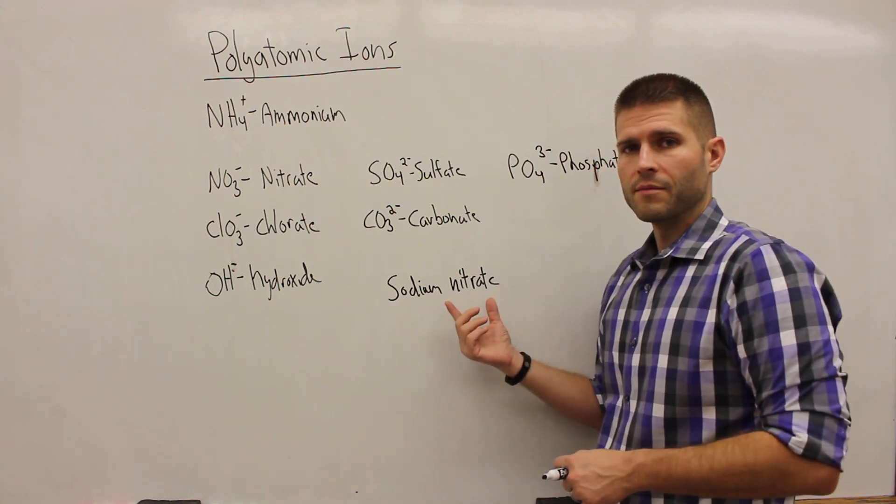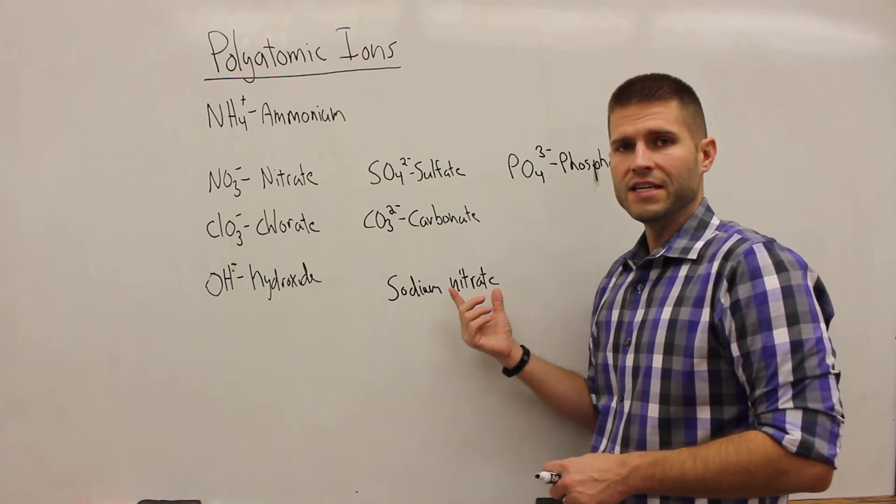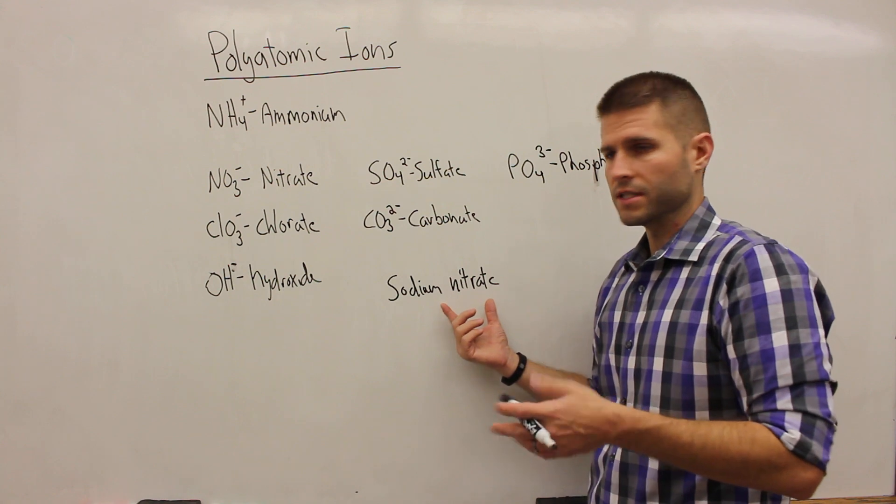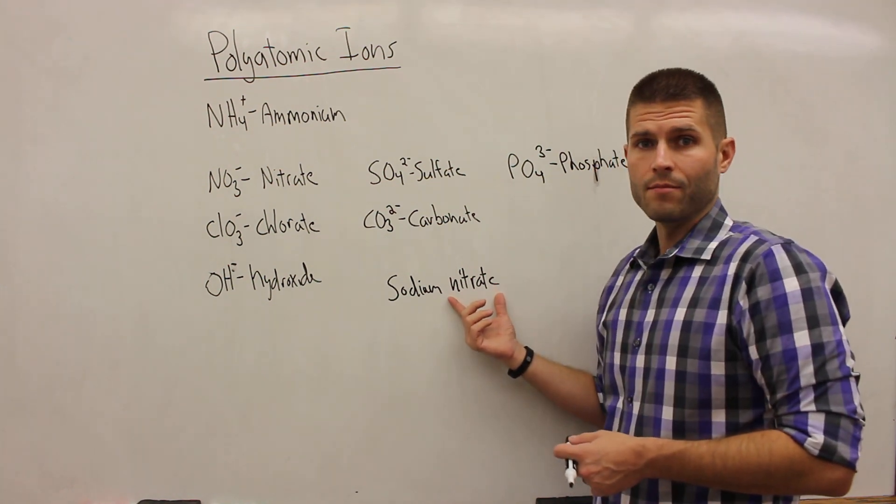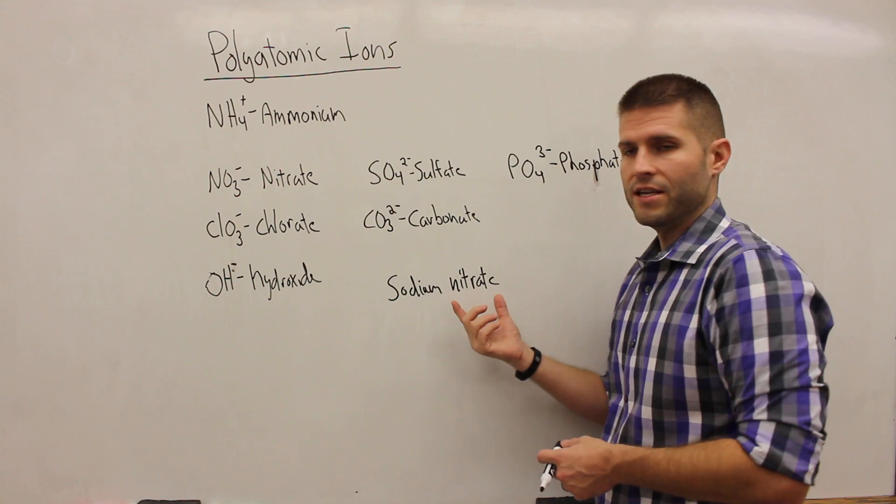Now, for the polyatomic anion, it's even easier than we have seen previously. All you do is write out the name of the polyatomic. So this is sodium nitrate. You do not have to change the ending of the nitrate.